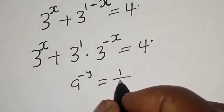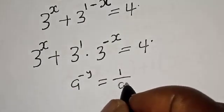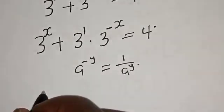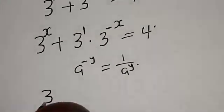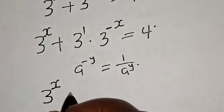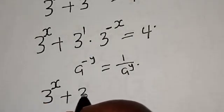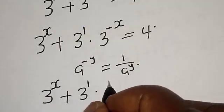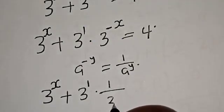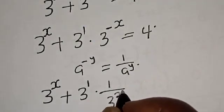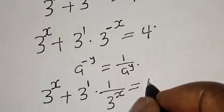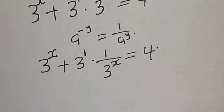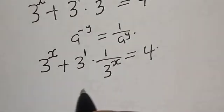Remember that a raised to power minus y is equal to 1 over a raised to power y. Then we have 3 raised to power x plus 3 raised to power 1 multiplied by 1 over 3 raised to power x is equal to 4. Now let's multiply all through by 3 raised to power x.